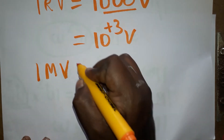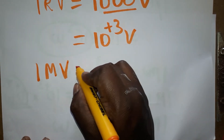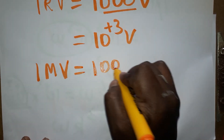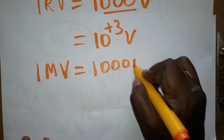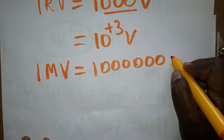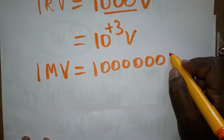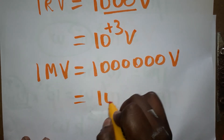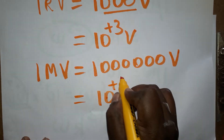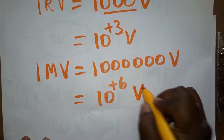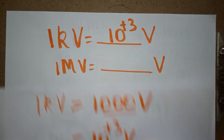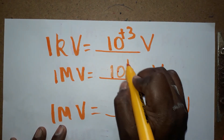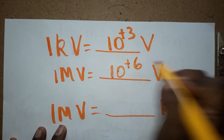The next thing: one megavolt is equal to how many volts? One megavolt, or million volts, has six zeros. We can write it as 10 to the power plus 6 volts. So one megavolt is 10 to the power plus 6 volts.